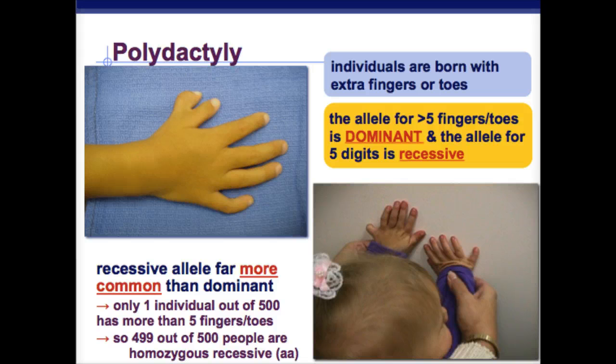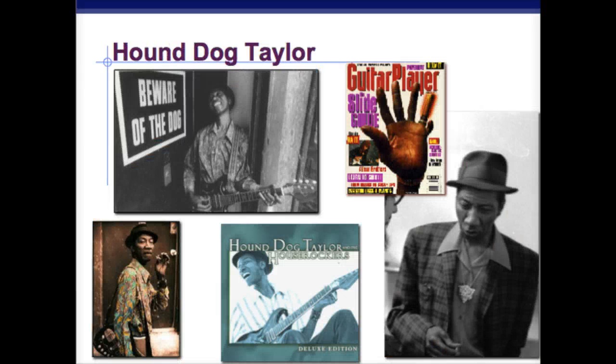So 499 out of 500 are homozygous recessive and will only have five digits. Here's an example of an individual who had an extra digit — Hound Dog Taylor, an artist from back in the day.